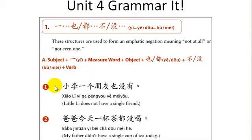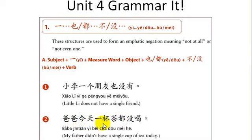The first example: 小离一个朋友也没有 — literally, does not have a single friend. Here's another example: 爸爸今天一杯茶都没喝 — my father didn't have a single cup of tea today. So you've seen three examples now, including the one in the dialogue.